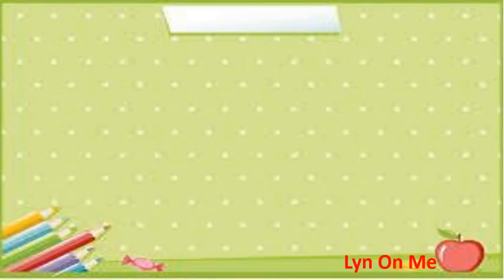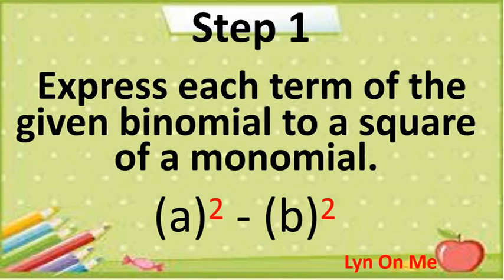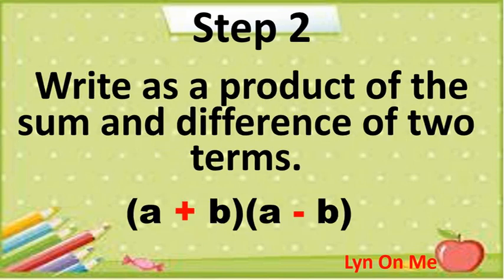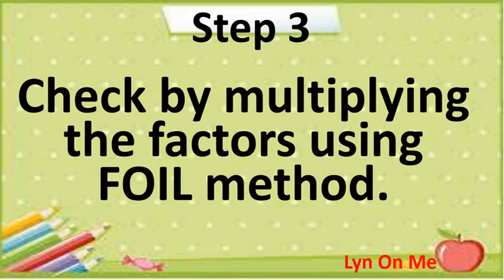How do you factor the difference of two squares? Let's review. Step 1: express each term of the given binomial as a square of a monomial. Step 2: write as a product of the sum and difference of two terms. Step 3: always check your factors by multiplying them using the FOIL method.